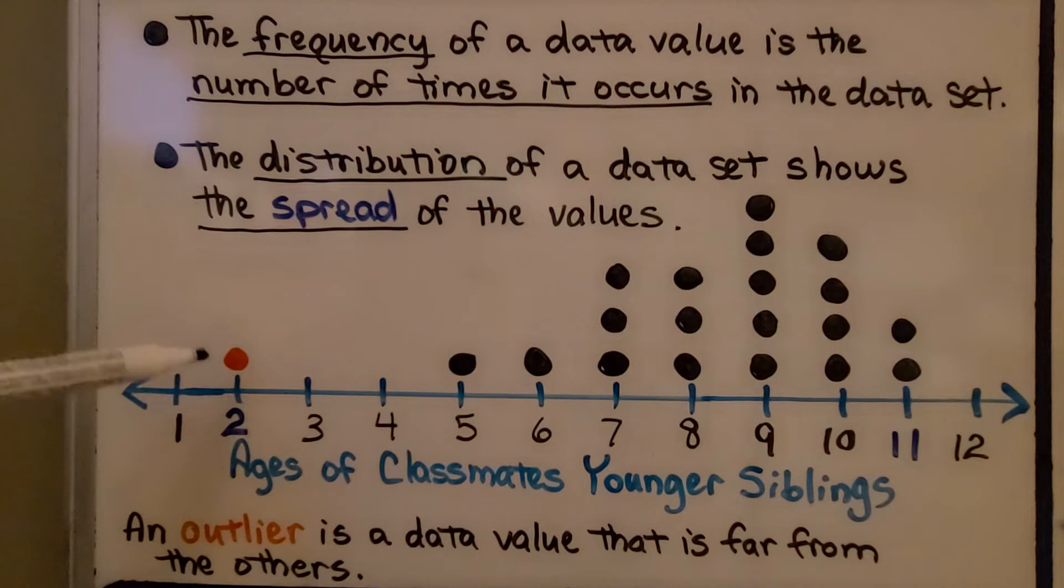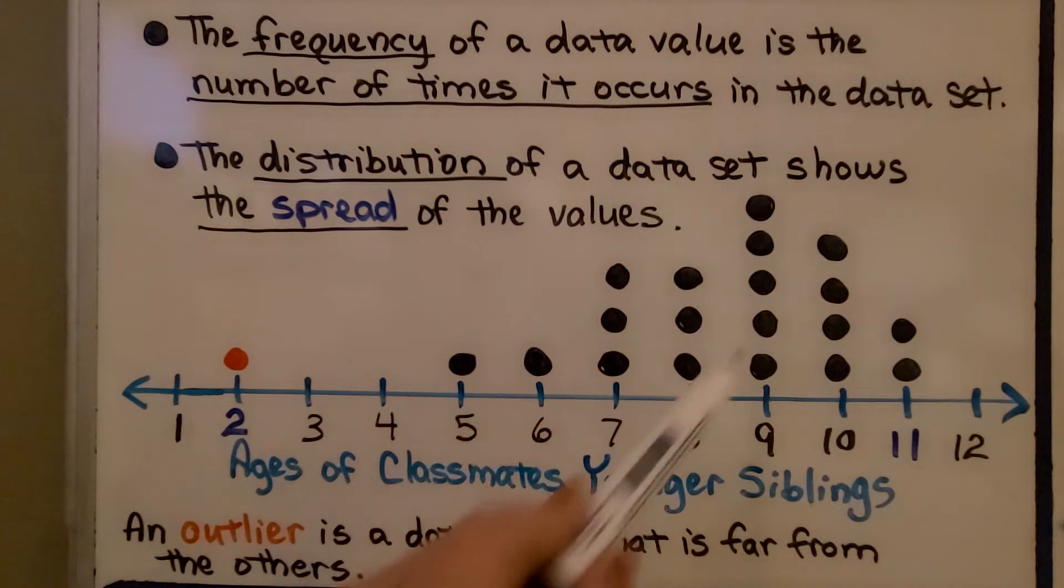2 is an outlier. It's a data value that is far from the others. You can see these are all clustered together, and this one's far from the other values.